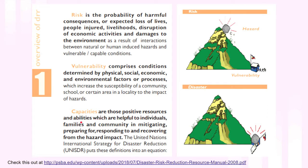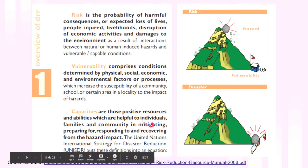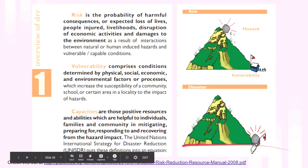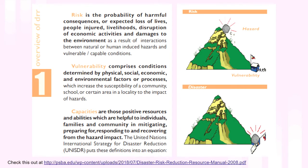Capacities are the positive resources which are helpful to individuals to mitigate or lessen the effect, prepare, respond, and recover from the impact. After a disaster happens, disaster recovery follows. However, we should not just focus on recovery — we should also look into mitigating and lessening the impact, adapting to the hazard, and responding and recovering from it. These are all parts of disaster risk and readiness, as compiled by the United Nations International Strategy for Disaster Reduction.